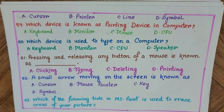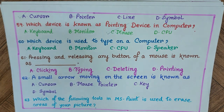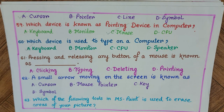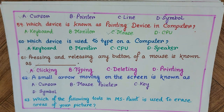Question 60: Which device is used to type on a computer? A) keyboard, B) monitor, C) CPU, D) speaker. The answer is A) keyboard. Question 61: Pressing and releasing any button of a mouse is known as — A) clicking, B) typing, C) deleting, D) printing. The answer is A) clicking.